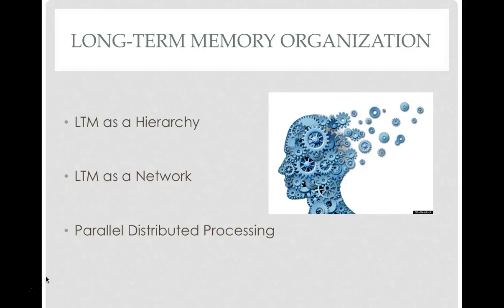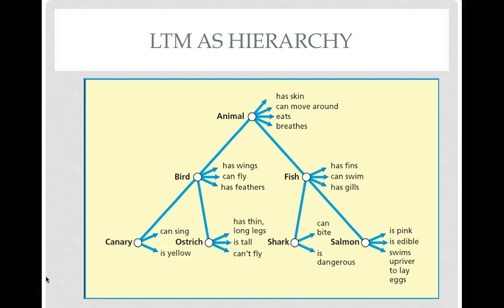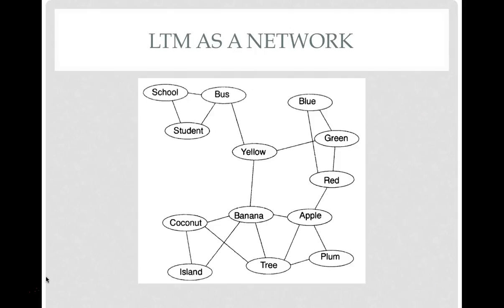Long-term memory can be organized as a hierarchy, a network, or through parallel distributed processing. Hierarchical organization is fairly straightforward — take the origin of species: you have animals, which break down into birds or fish, and each of those categories breaks down further. Information flows in these hierarchical categories.